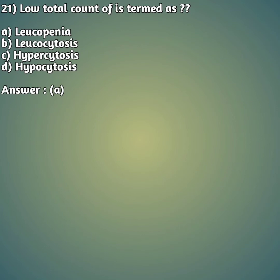Question 21: Low total white cell count is termed as — option A: leukopenia, option B: leukocytosis, option C: hypercytosis, option D: hypocytosis. The right answer is option A, leukopenia. A low white cell count is called leukopenia.